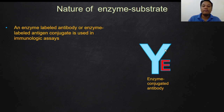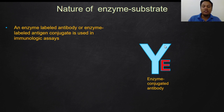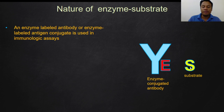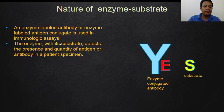The enzyme-conjugated antibody will stick to the patient's antigen or antibody. We also have the substrate, which needs to be very specific — a specific enzyme for a specific substrate. The enzyme with its substrate detects the presence and quantity of antigen or antibody in the patient specimen.